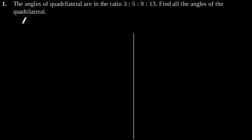Exercise 8.1, Question number 1. The angles of a quadrilateral are in the ratio 3:5:9:13. Find all angles of the quadrilateral.